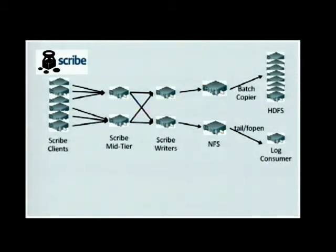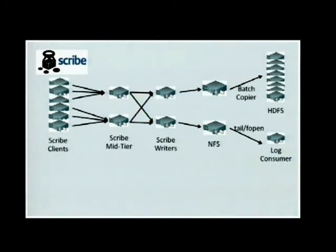The second hop, from the mid-tier to the writer, is basically to do the data shuffling. Log messages from the same category should go to the same destination, so that it's easier for our users to access.